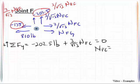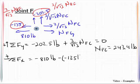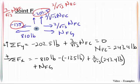This is negative 202.5 pounds plus 3 over the square root of 13 NFC. That is equal to zero. So NFC equals 243.4 pounds. And then we'll sum forces in the x direction. This will be negative 810 pounds minus a negative 135 pounds plus 2 over the square root of 13 times 243.4 pounds. That's what we just found for NFC. And that will be plus NFG, and all of that will work out to be zero. Thus we find NFG equals 540 pounds.